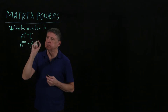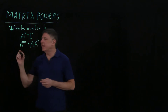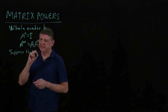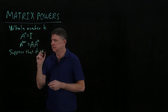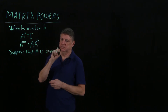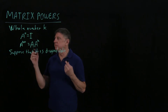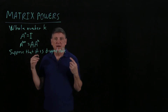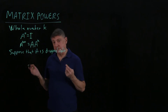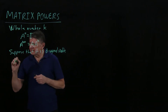Then we say A to the k+1 equals A times A to the k. Now let us suppose that A is diagonalizable. A to the zero is the identity — not so interesting. A to the one is A — also not so interesting. But it starts to get interesting at A squared.